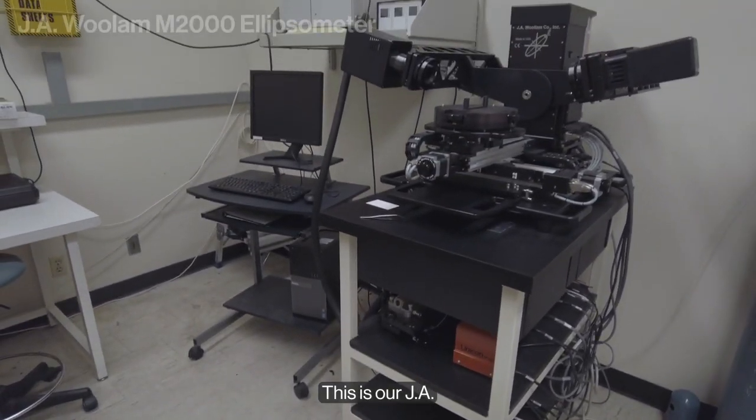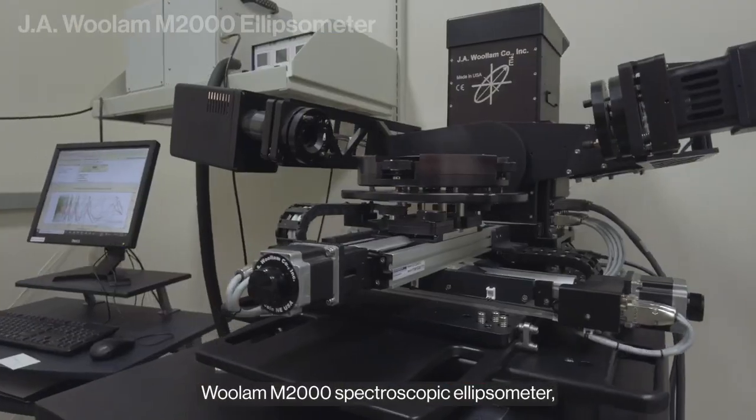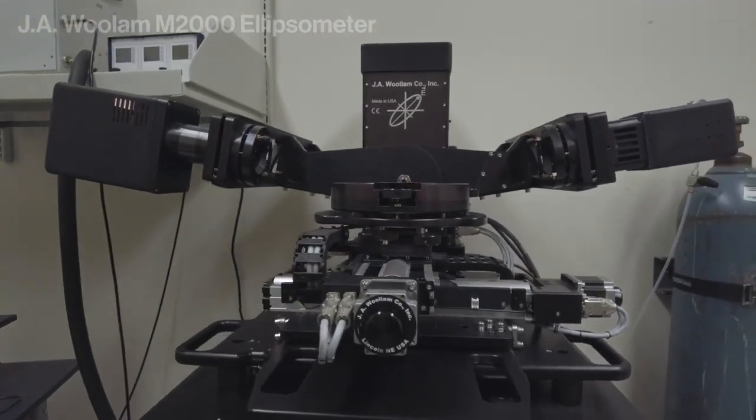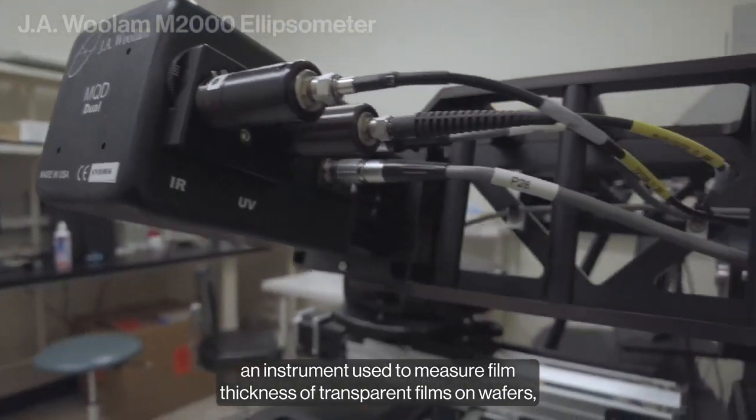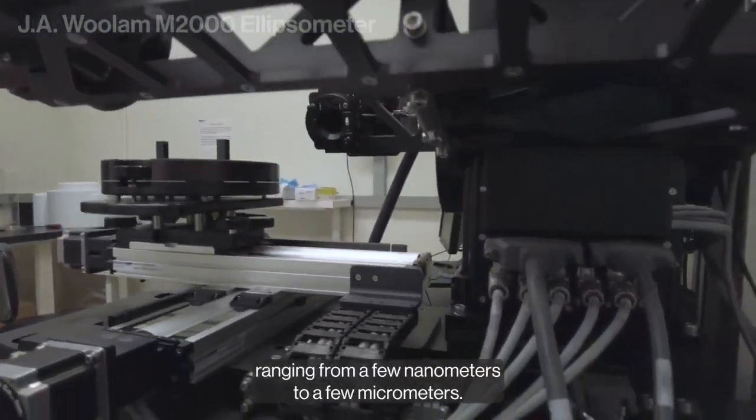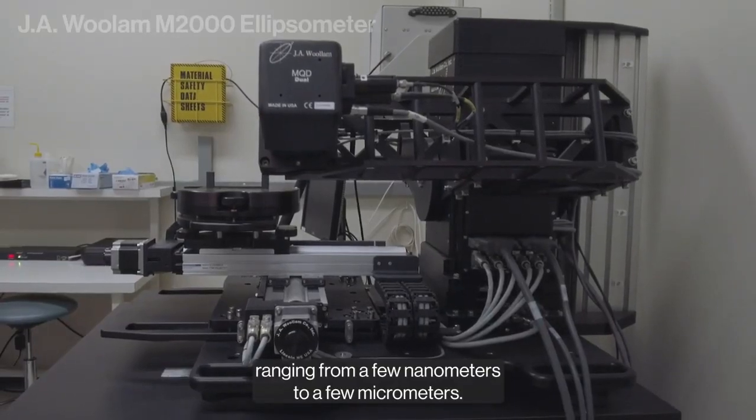This is our JA Woollam M2000 spectroscopic ellipsometer, an instrument used to measure film thickness of transparent films on wafers ranging from a few nanometers to a few micrometers.